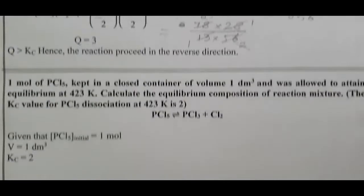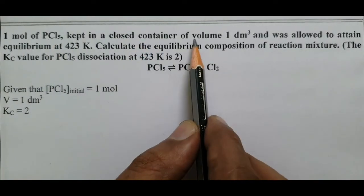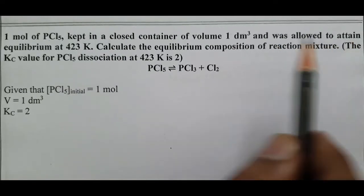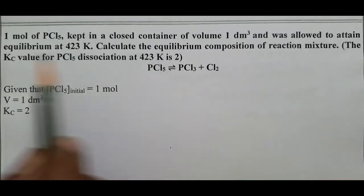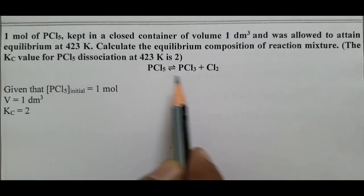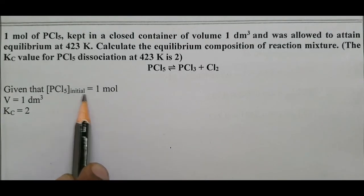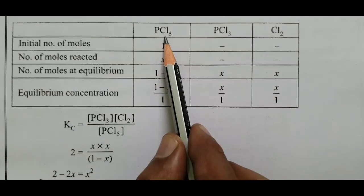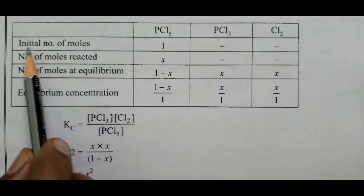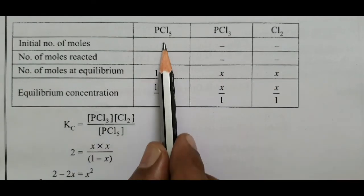Problem 4: 1 mole of PCl₅ is kept in a closed container of volume 1 dm³ and allowed to attain equilibrium at 423 K. Calculate the equilibrium composition. Kc for PCl₅ decomposition is 2. Reaction: PCl₅ ⇌ PCl₃ + Cl₂. Initial moles: PCl₅ = 1, PCl₃ = 0, Cl₂ = 0. Moles reacted: x. Moles at equilibrium: PCl₅ = 1−x, PCl₃ = x, Cl₂ = x.